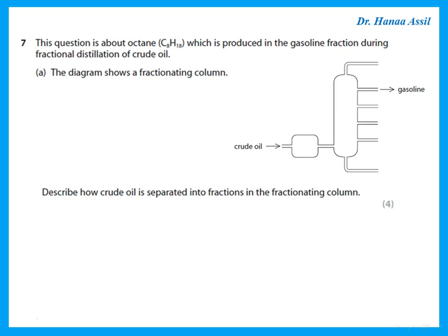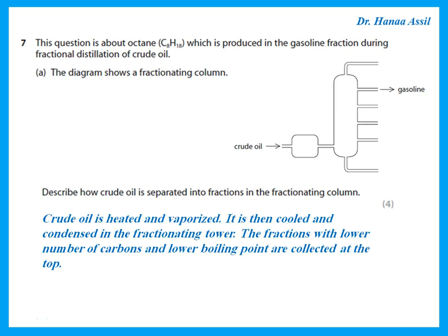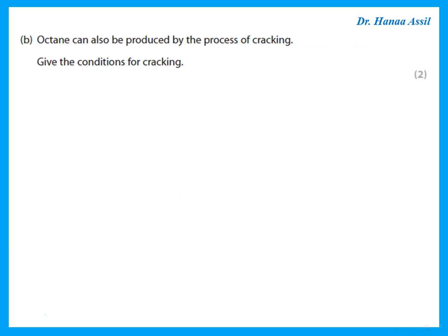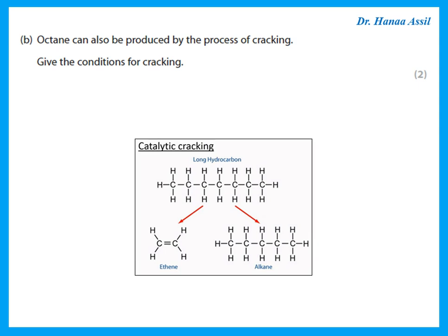This question is about octane produced in the gasoline fraction. In fractional distillation, crude oil is heated and vaporized, then cooled and condensed in the fractionating column. Fractions with a lower number of carbons and lower boiling points are collected at the top. Octane can also be produced by cracking — the breaking down of long-chain hydrocarbons into shorter chains. The conditions for cracking are 600–700°C and an aluminium oxide (alumina) catalyst.